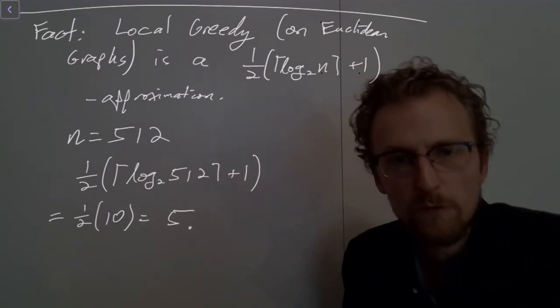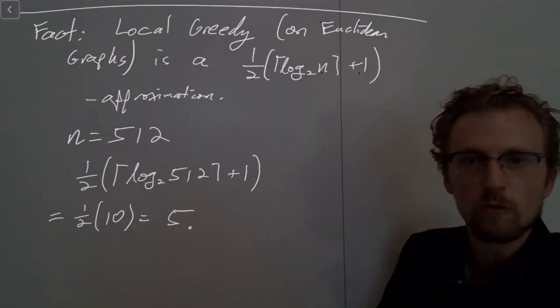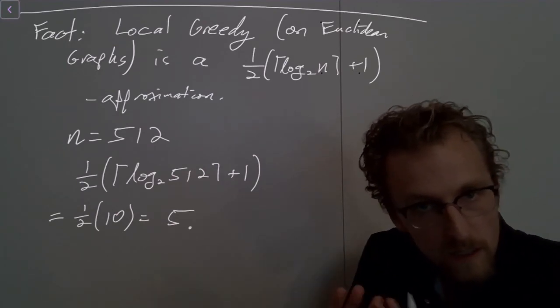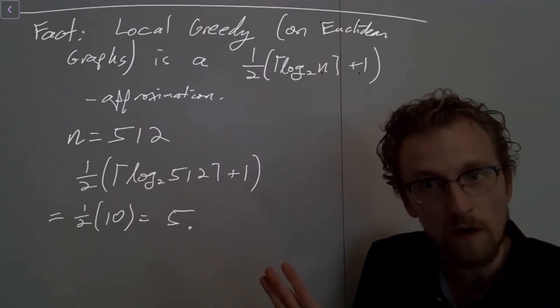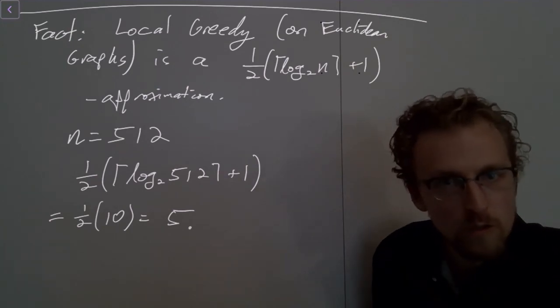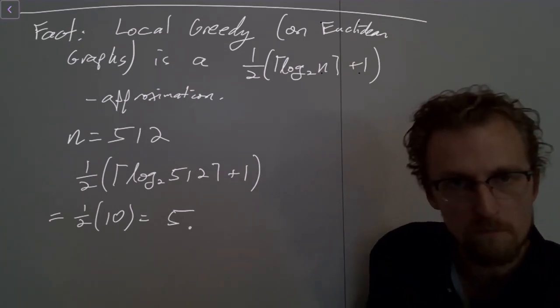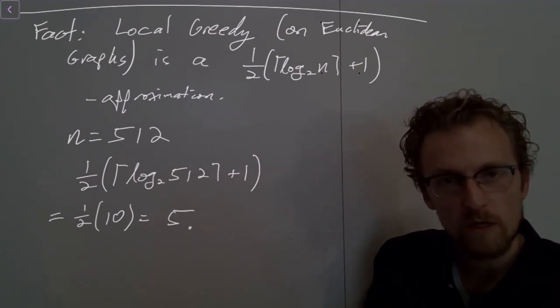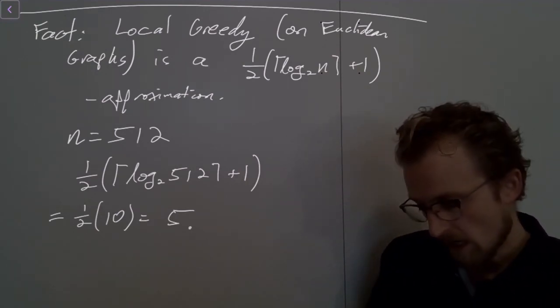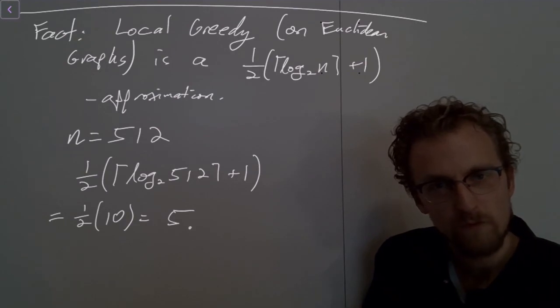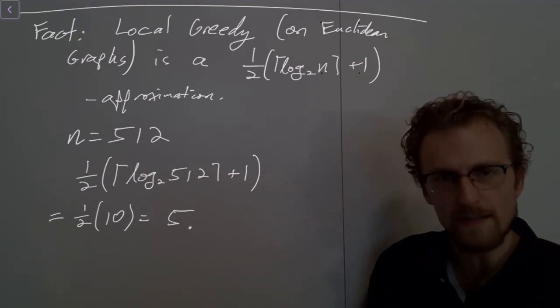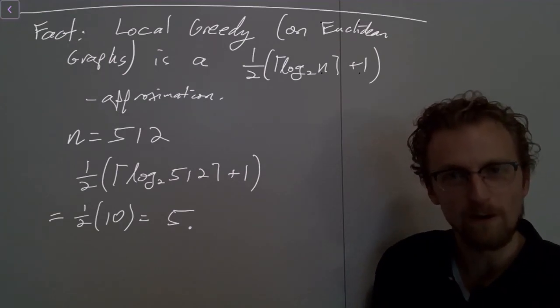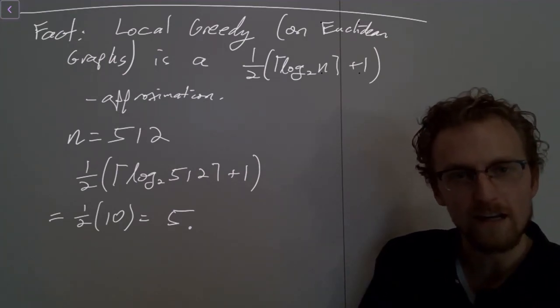So we went from having, but by restricting to Euclidean graphs, we took this algorithm that had an unbounded approximation ratio before. It could return solutions that are as bad as you could imagine, as bad as you could ever want. It took that to having an approximation ratio of 5. And it's a linear time algorithm. So this is, I mean, 5 is not great, but it's finite. It's now, for any fixed n, we have a finite approximation ratio.